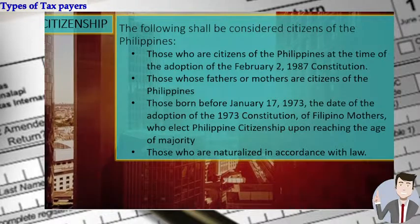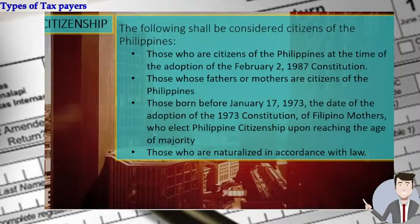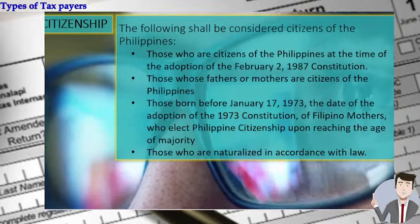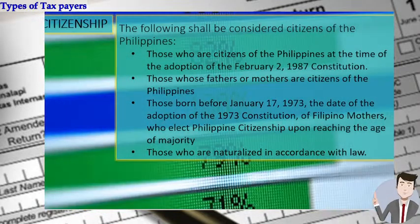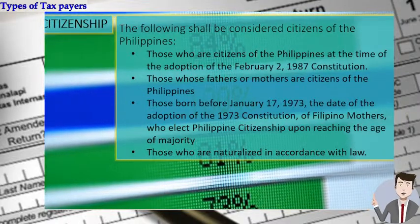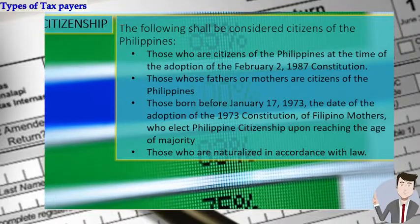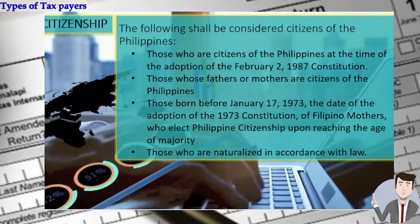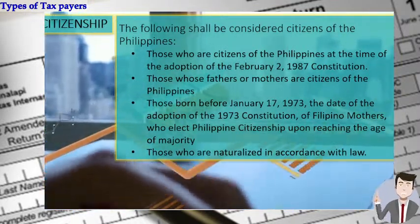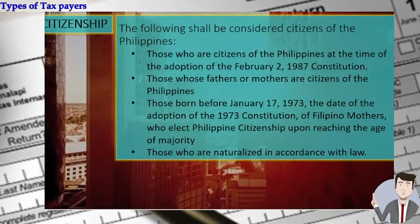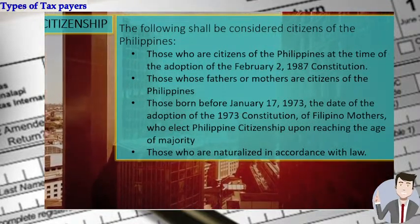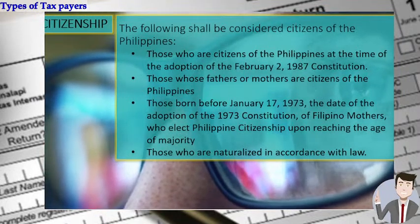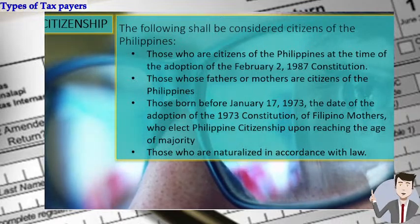There are lots of individuals not born in the Philippines or without Filipino blood who are still considered citizens because our law allows foreigners to be naturalized. Many celebrities participate in national team representations because they were naturalized in accordance with the law. That is under Section 1 of the 1987 constitution.